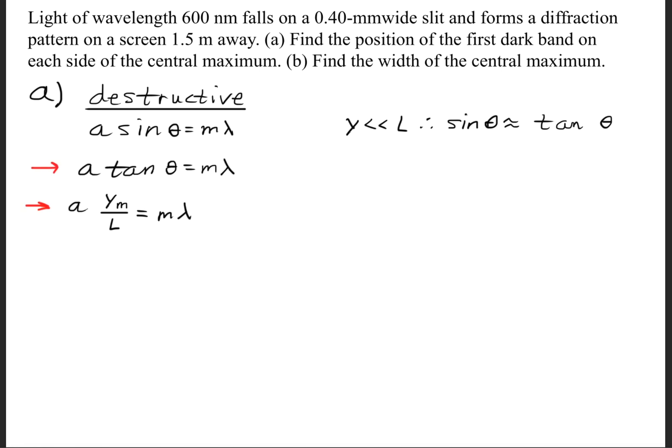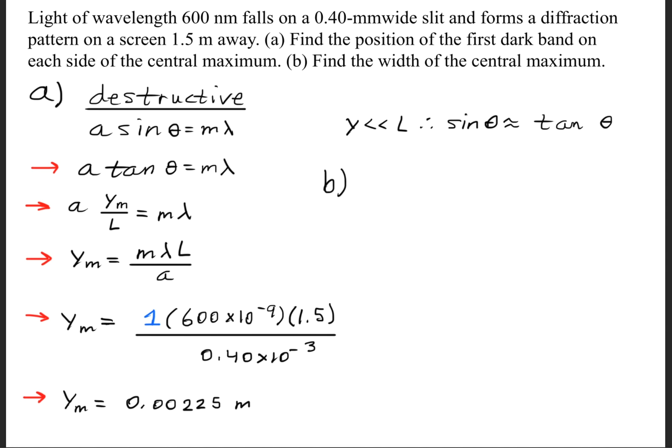When we make our substitution, we know that tangent of theta is simply the y sub m variable divided by L, which is the distance between the slit and the screen. We'll rearrange this formula and solve for y. If we plug in our variables using the integer m equals 1, because part A asks to find the position of the first dark band on each side of the central maximum, we get a value of 0.00225 meters.